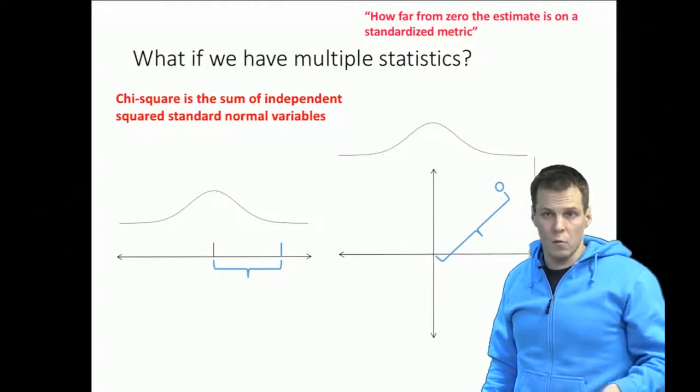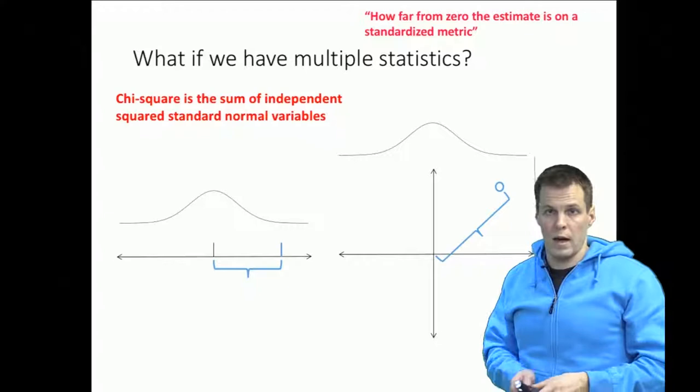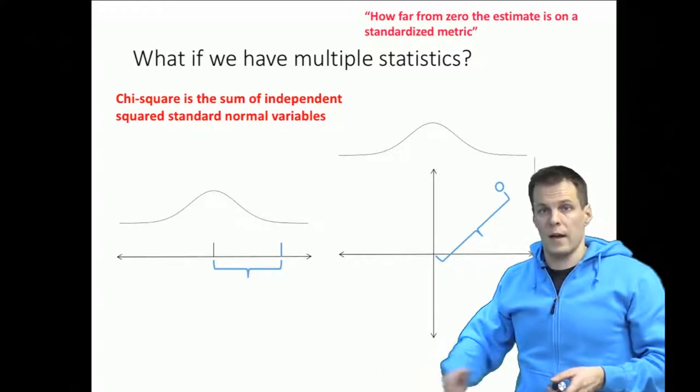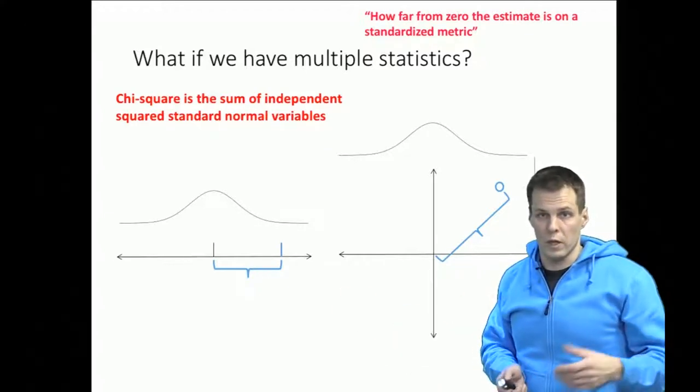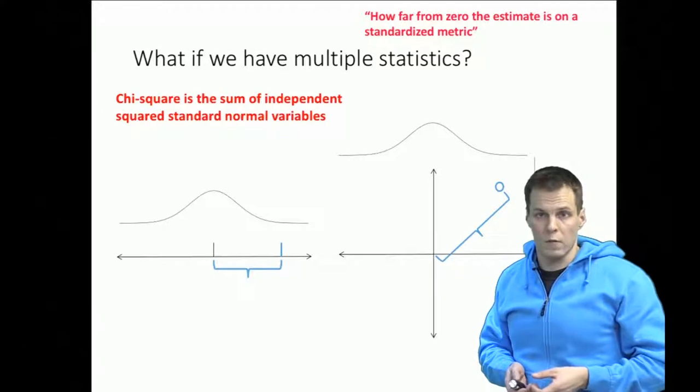So if you have two variables we take squares of both and then we sum the squares and then that gives us a distribution which follows chi-square with degrees of freedom of two.